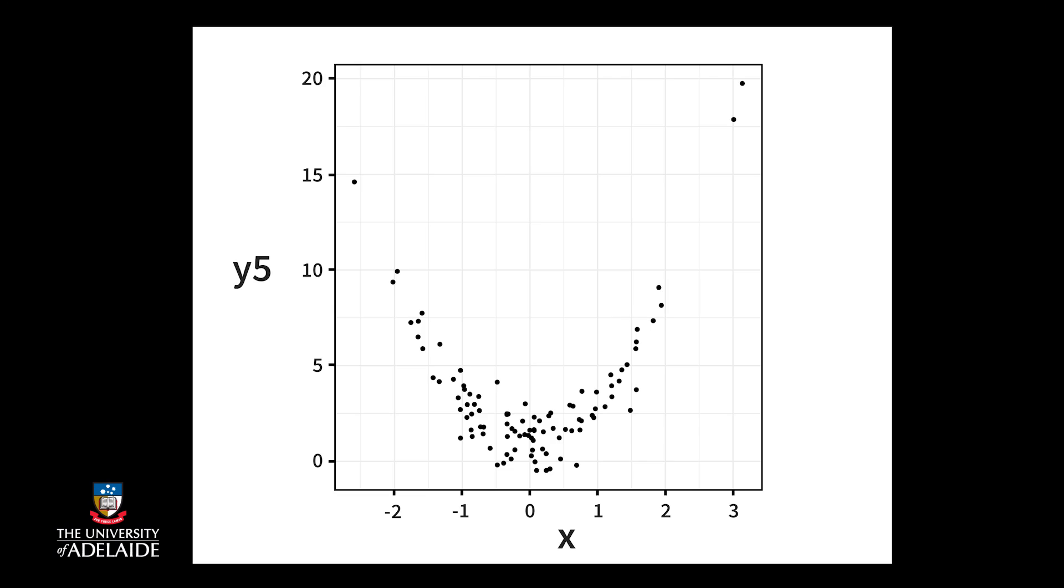The final question we ask is, is the relationship best described by a straight line, what we call a linear relationship, or is there some curvature, a nonlinear relationship? In this scatter plot, we see that the relationship is curved, so it's a nonlinear relationship.